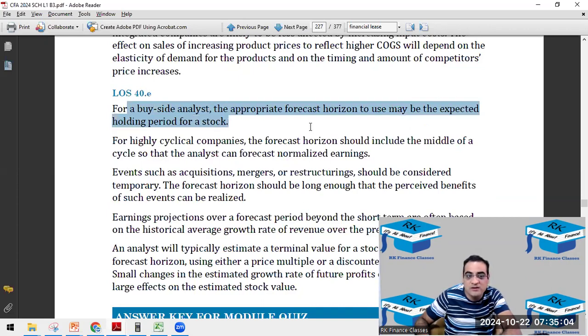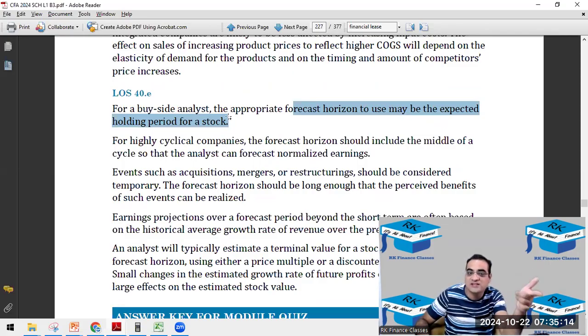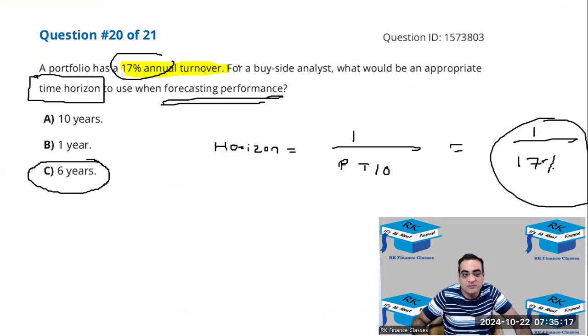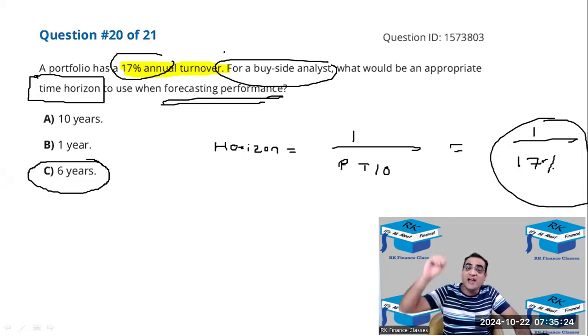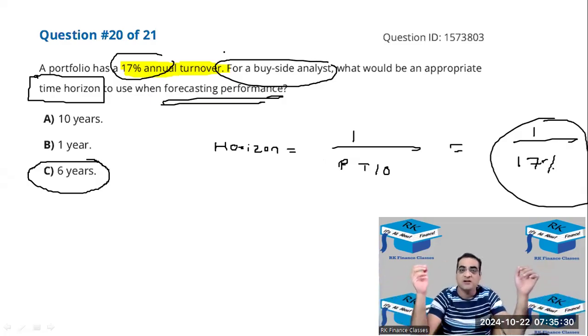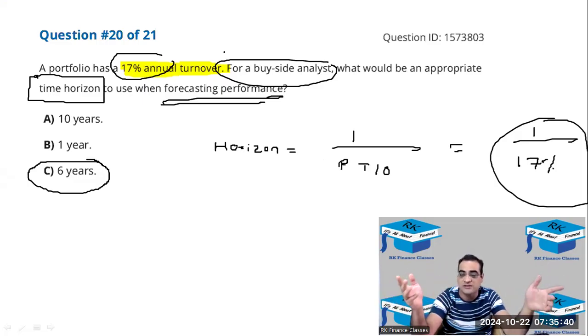No, they are not covered. Appropriate forecast horizon to use maybe the expected holding period of a stock, but not one upon turnover. So take a note of this - buy side analysts actually invest the money and sell side analysts simply analyze and give recommendations to others to invest, which is like brokerage houses do. Buy side analysts are portfolio managers, mutual fund managers, hedge fund managers.